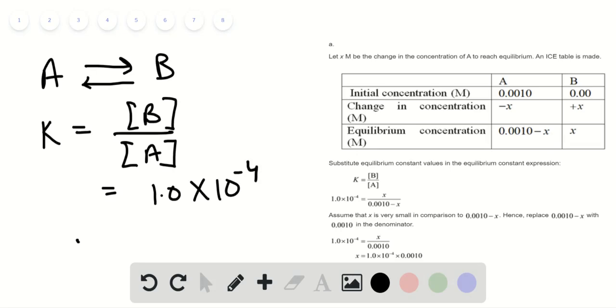For option A, let us consider x be the change in concentration of A to reach an equilibrium. Again drawing an ICE table, we substitute the equilibrium constant value into the expression.